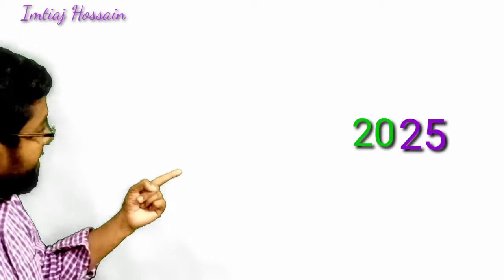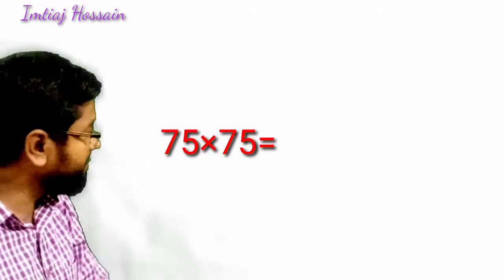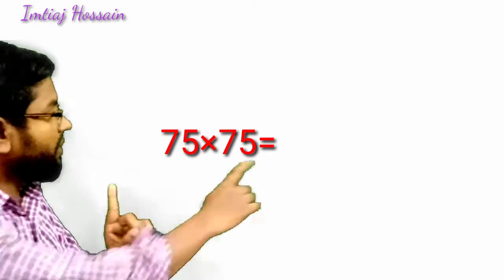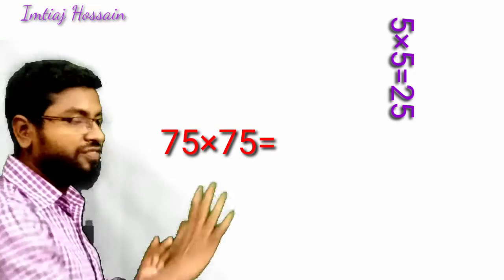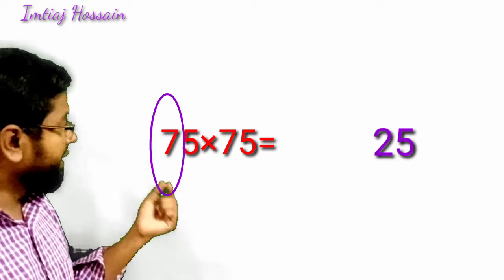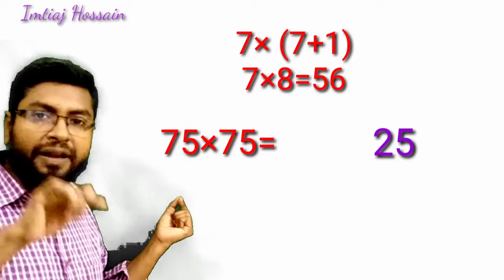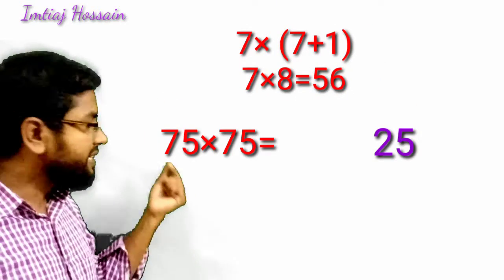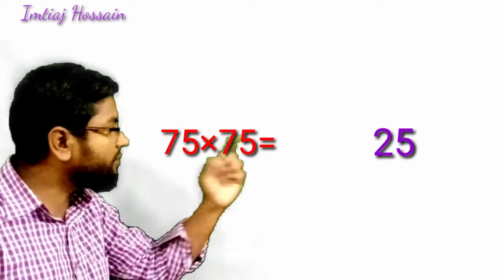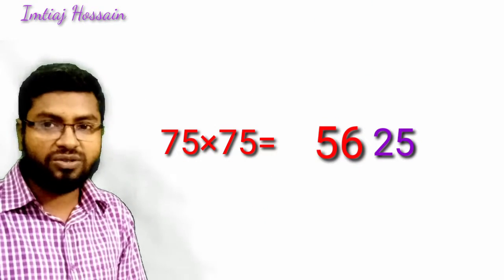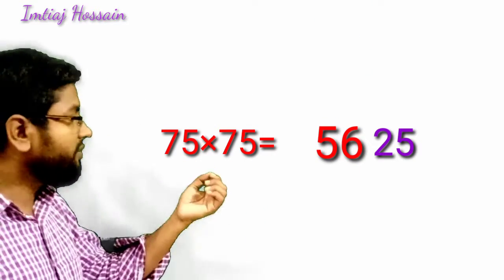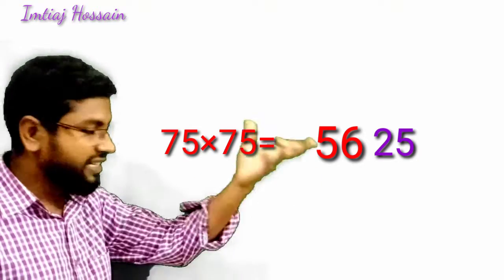Look, if I go for 75 times 75. Last there will be 25, I write 25. Now 7, the digit after 7 is 8. 7 and 8, if we multiply, it will be 56. So what will be the answer? 5,625.